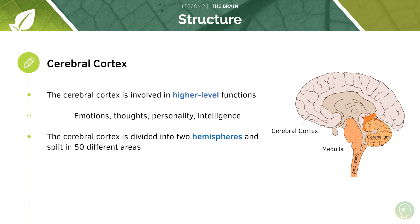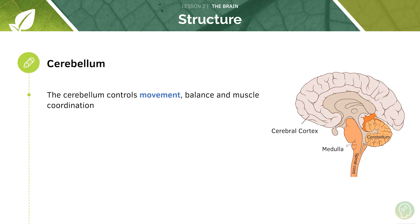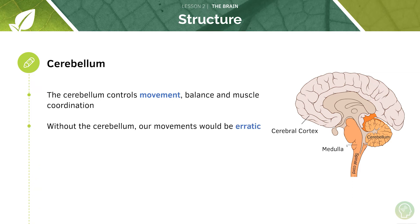For example, one area of the brain is specialised for speech — if you damage it in an accident, then your speech might be impaired. The cerebellum, which literally means 'little brain', is responsible for the control of movement, balance and muscle coordination. Without the cerebellum, our movements would be erratic because they wouldn't be planned very well.